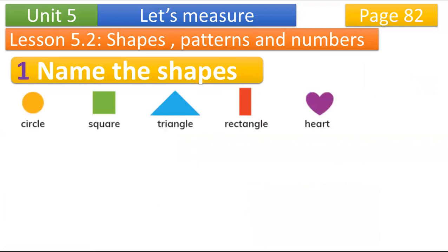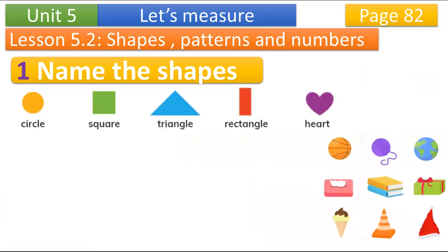Today we learned to name the shapes. What is this? It is a circle. What is this? It's a square. What's this? It's a triangle. What's this? It's a heart. You can also find objects that look like shapes.